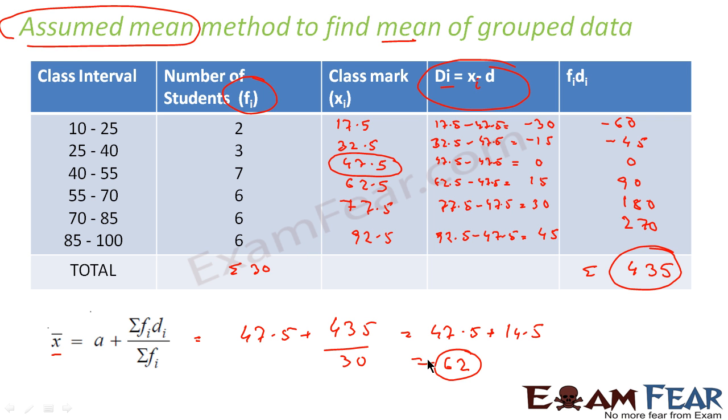So you see, in the earlier process also, in the earlier method also, the value we got was 62. That is, 62 was the mean for this data. And now also what we are getting is 62.